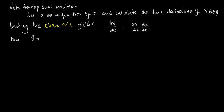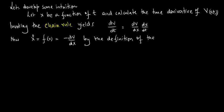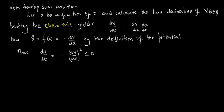Now, x dot equals f of x, which equals minus dV dx by the definition of the potential. Thus, dV dt equals minus dV dx whole squared, which is less than or equal to 0.